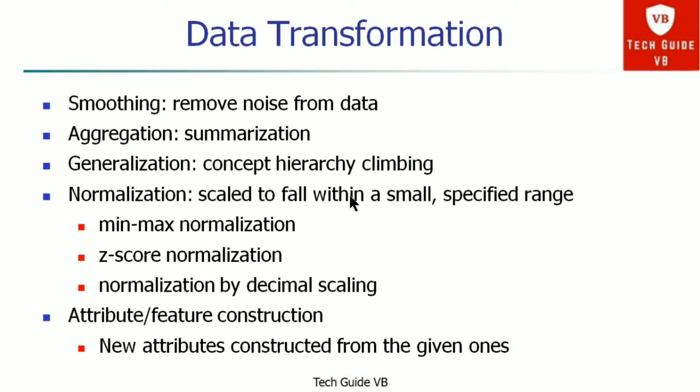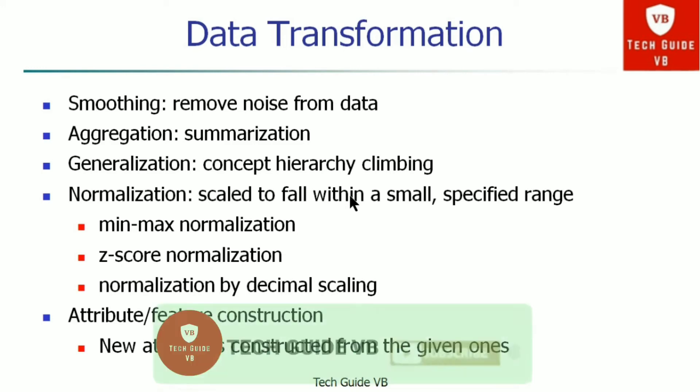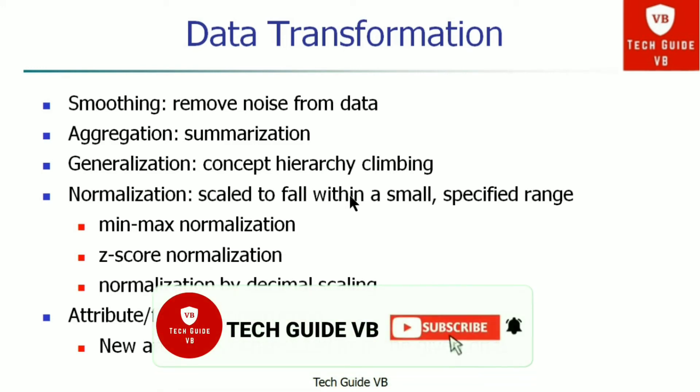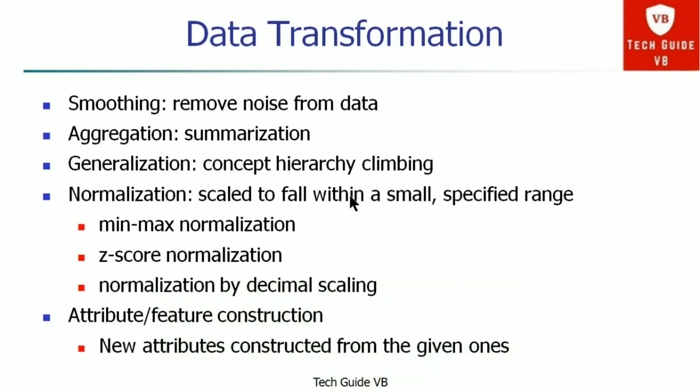The next topic is data transformation. For data transformation, we will look at different steps: smoothing, aggregation, generalization, normalization, and attribute or feature construction. Smoothing removes noise from the data.